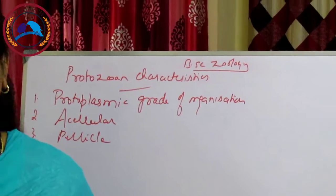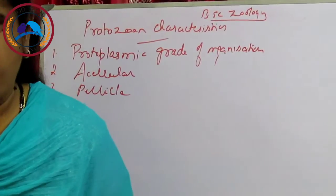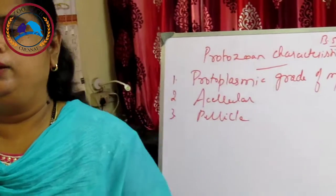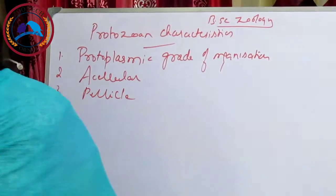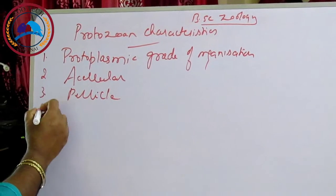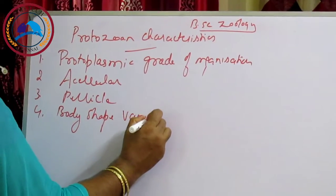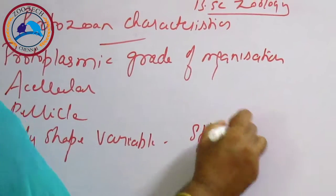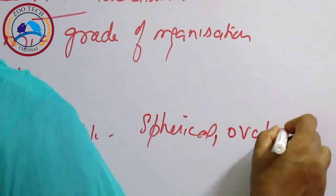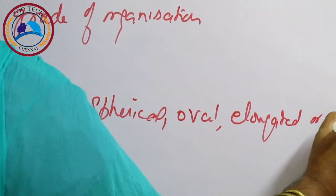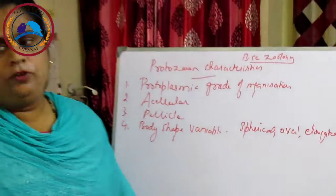Protozoans are solitary or colonial. In colonial forms, the individuals are alike and independent — they can live alone or in colonial forms. Next, body shape is variable. It may be spherical, oval, elongated, or flattened.